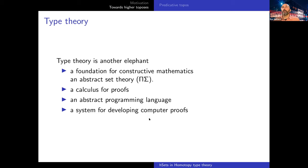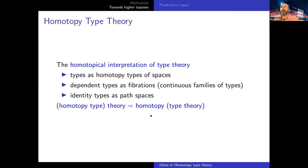The important thing is that modulo some coherence conditions, the higher topos precisely corresponds to type theory with univalence in the same way as we have that correspondence for ordinary topos. So this is a correspondence with intuitionistic higher order logic. Type theory, of course, is a similar elephant. It's a foundation for constructive mathematics, a calculus for proofs, an abstract programming language, and a system for developing computer proofs.